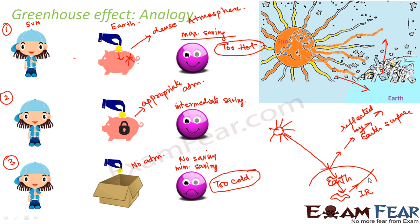This infrared radiation tries to escape out of the earth into space, and to do so it must cross the atmosphere. However, in the layers of atmosphere there are certain gases which absorb a part of the infrared radiation. Since infrared radiation heats objects, when it gets trapped within the earth the temperature of the earth increases — and this process is known as the greenhouse effect.